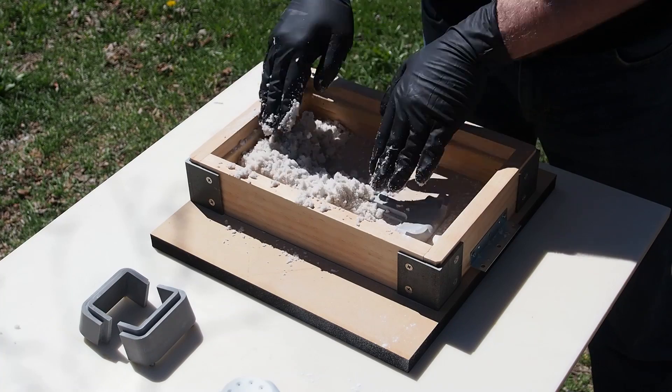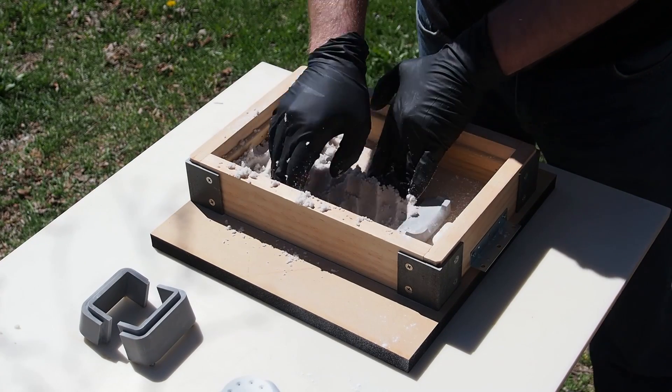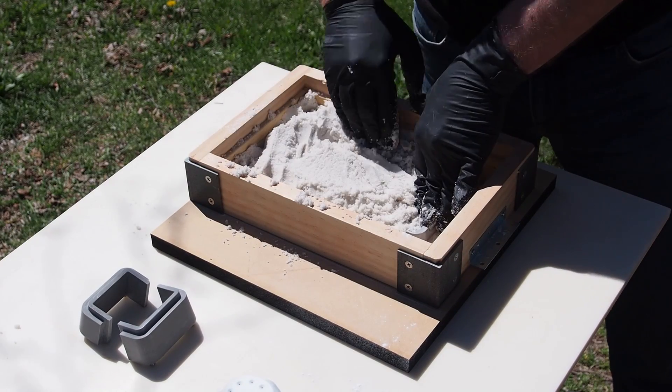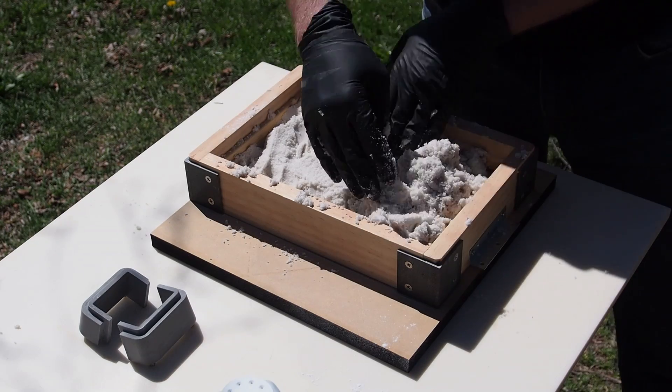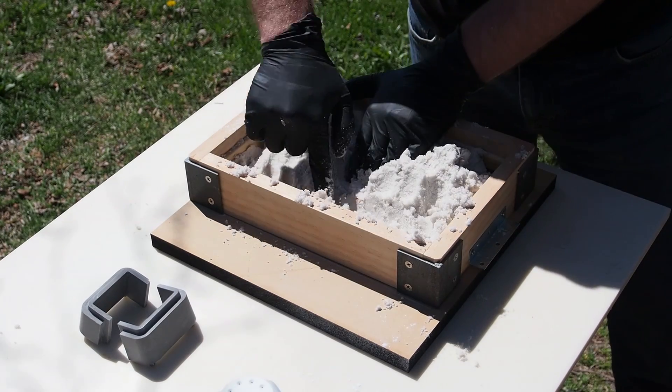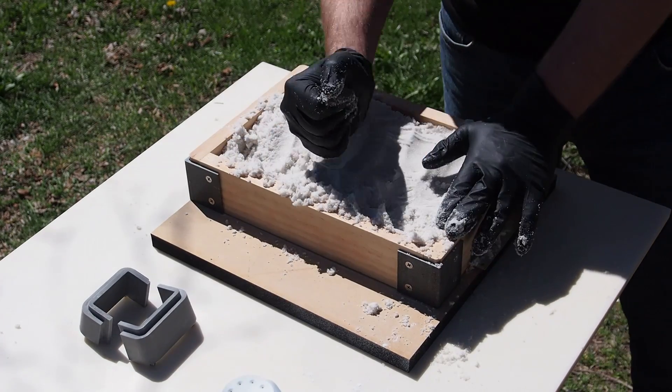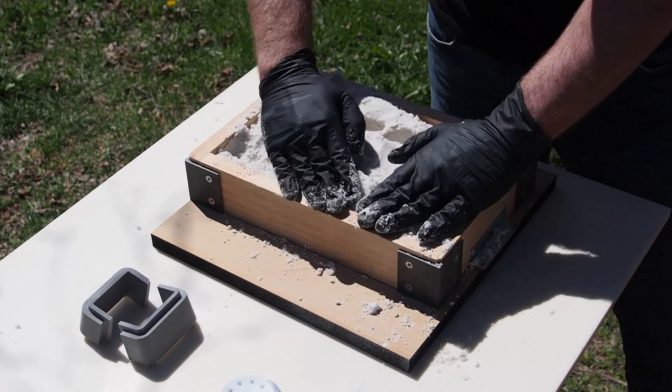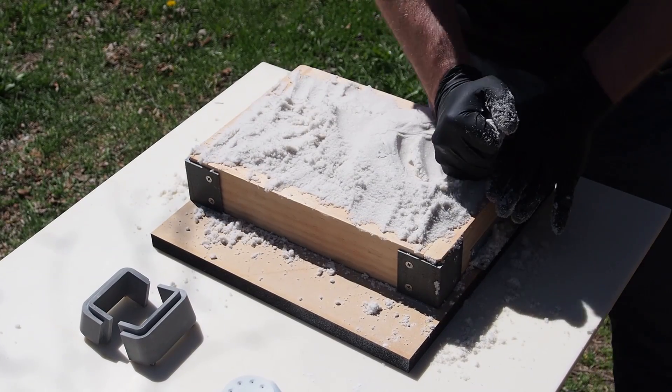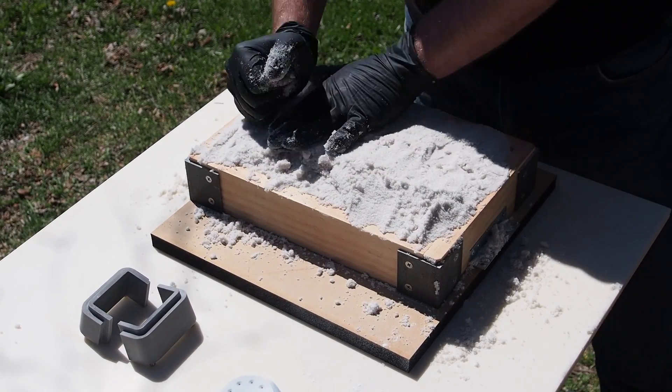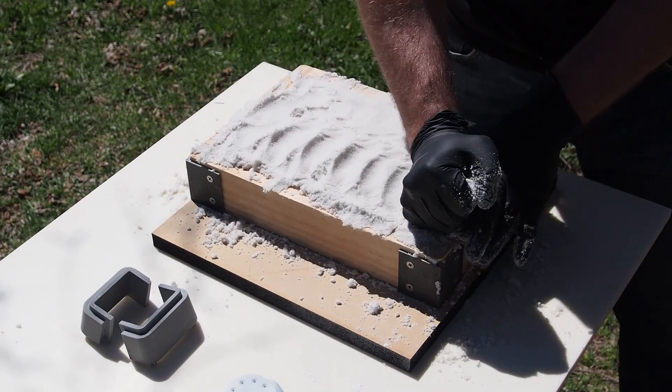Sodium silicate will dry on its own when exposed to air, or the process can be sped up by exposing the sand to carbon dioxide. When cured, it has the consistency of a sugar cube with about the same surface quality. This can be improved by adding starch into the mix, but the more dense it is, the greater the chance for trapped gas.